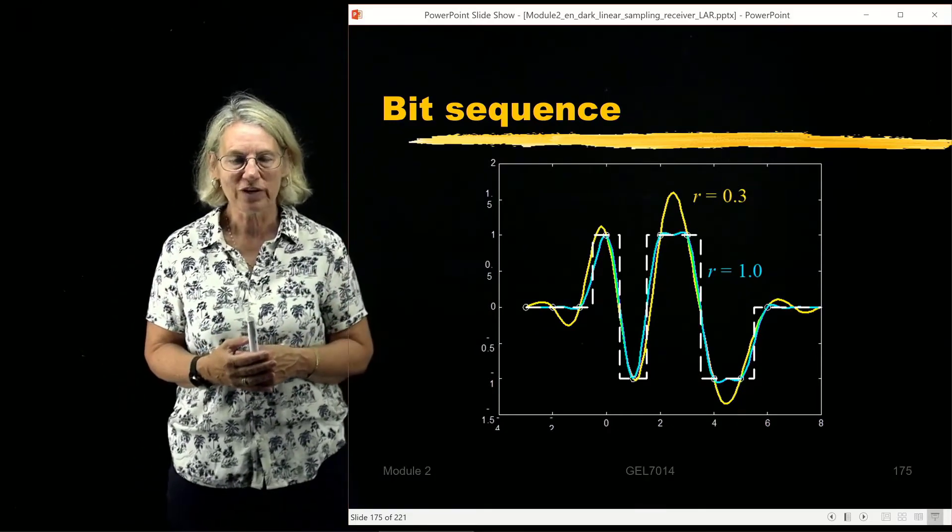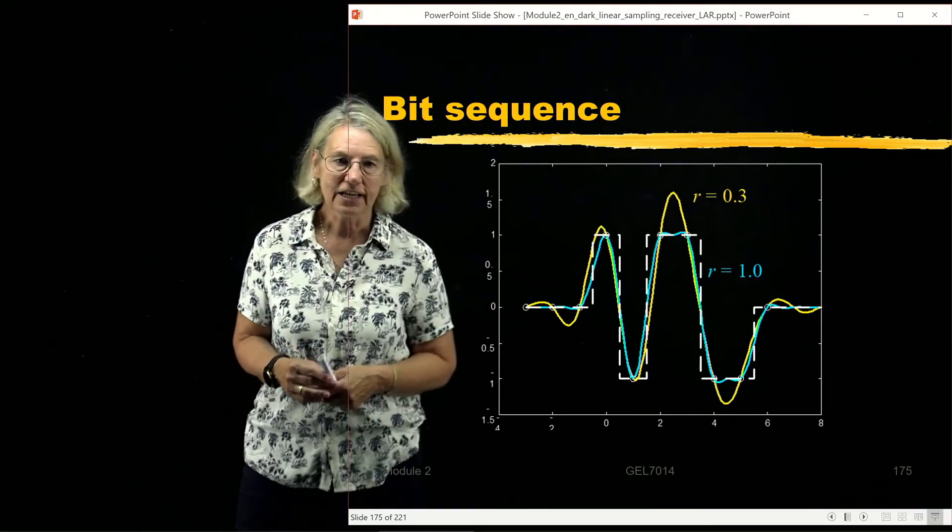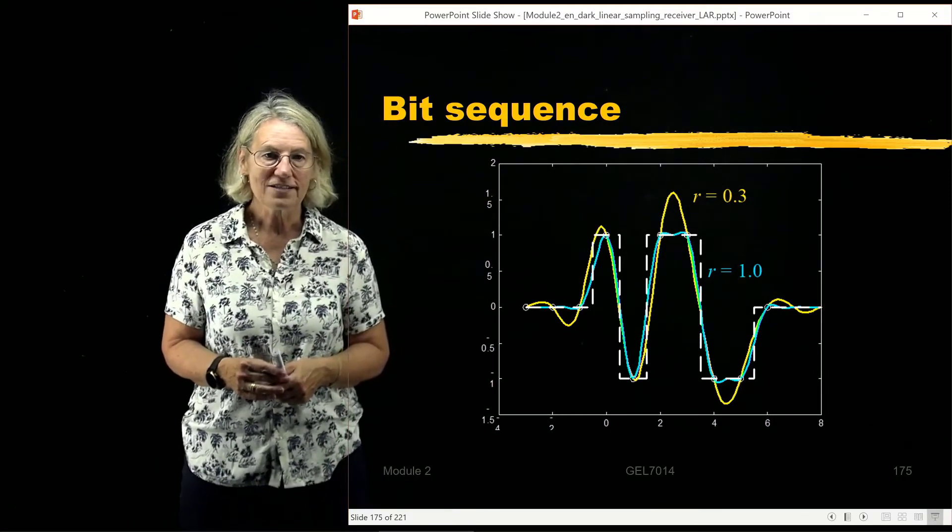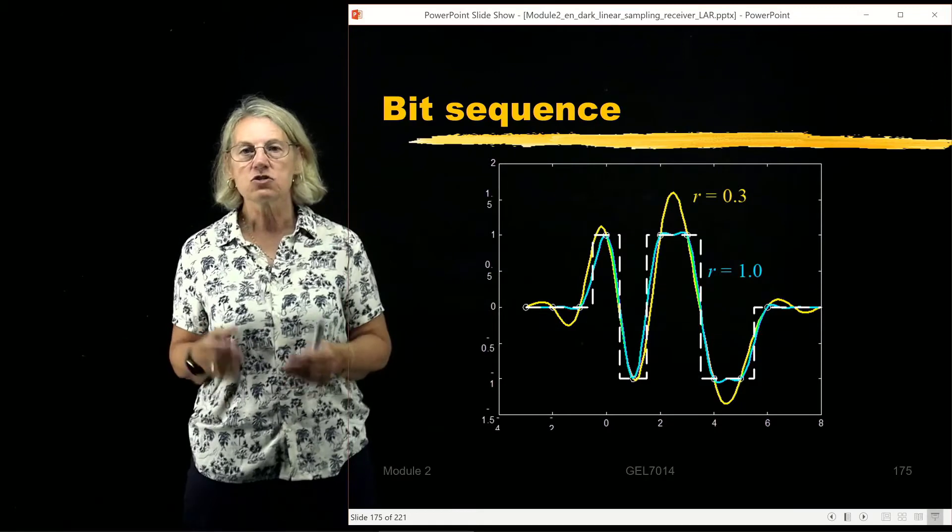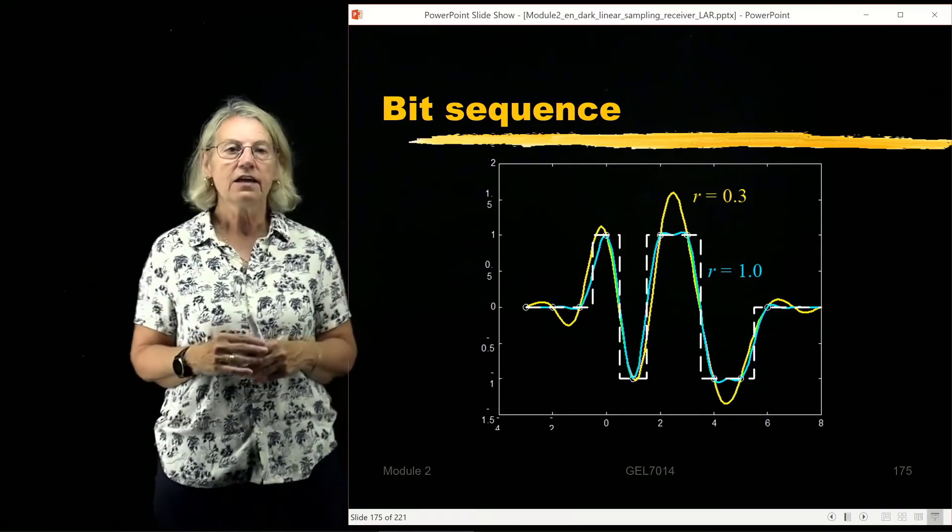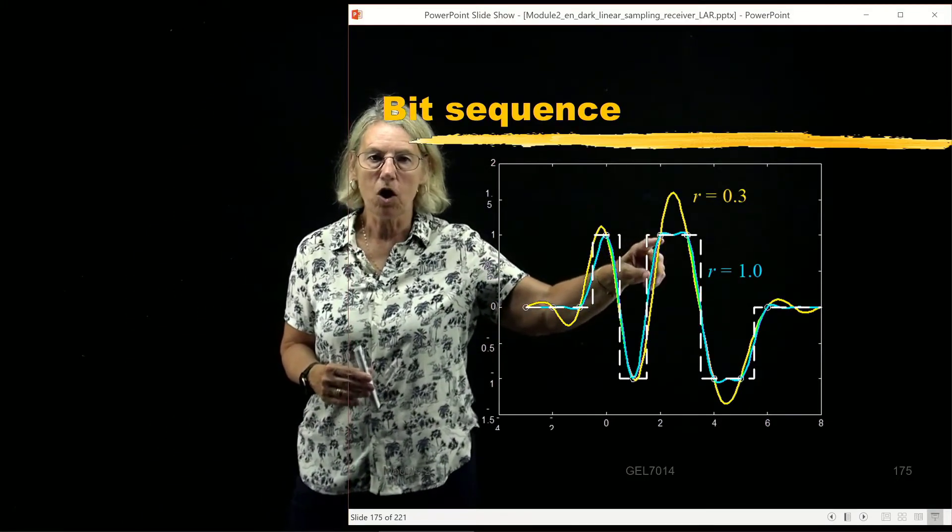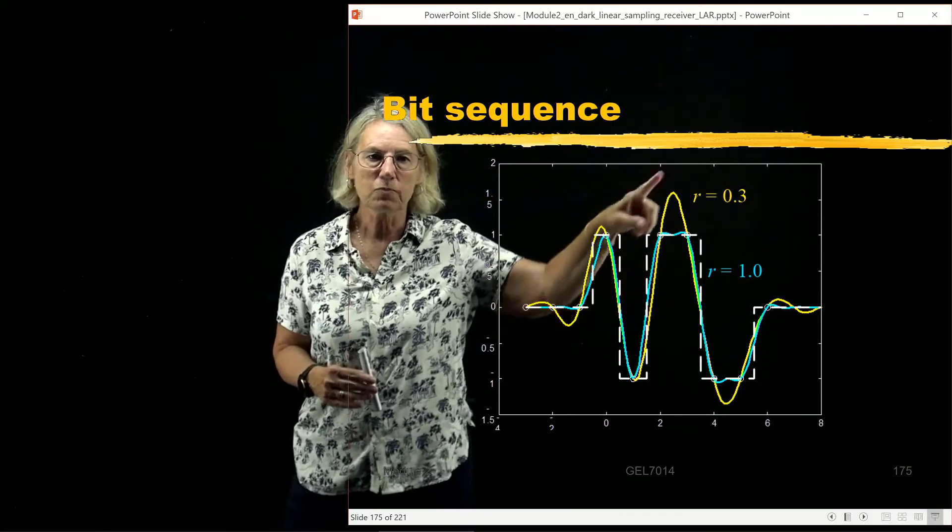The first one in the yellow is an R equal 0.3, which is a very common choice for a trade-off. And in the blue is the R equal 1. So R equal 1 means we are using twice the bandwidth we need theoretically, and you can see that the side lobes are very very small here. When we use R equal 0.3, the side lobes are larger but still manageable.